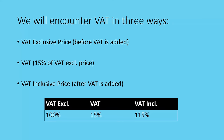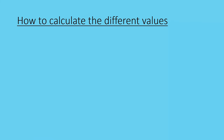Think about the VAT exclusive price as 100%. VAT is 15% — it's 15 parts of the 100%. So the VAT inclusive price will be 115%. That is very, very important for you to remember. Always think: VAT exclusive = 100%, VAT = 15%, and VAT inclusive = 115%.